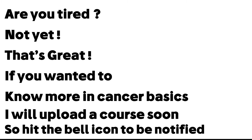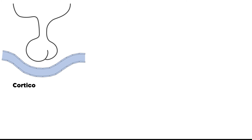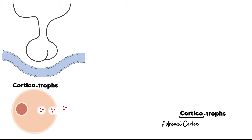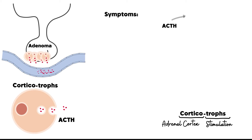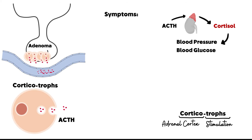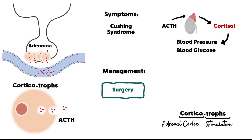The third type involves corticotrophs. 'Cortico' stands for cortex — the adrenal cortex — and 'trophs' stands for stimulating. This hormone, ACTH, will stimulate the adrenal cortex. In case of adenoma, ACTH is secreted in excess, leading to overstimulation of the adrenal cortex and increased cortisol. Cortisol is responsible for the stress response, causing increased blood pressure and increased blood glucose — a syndrome called Cushing syndrome.